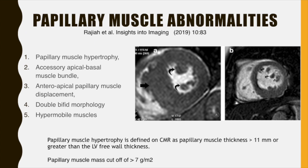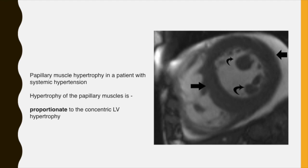The subvalvular apparatus consists of the papillary muscles and chordae tendineae. A number of papillary muscle abnormalities can be noted in patients with HCM such as papillary muscle hypertrophy, accessory apical basal muscle bundle, anteroapical papillary muscle displacement, double bifid morphology, and hypermobile muscles. Papillary muscle hypertrophy is defined on CMR as a papillary muscle thickness of more than 11 mm or greater than the LV free wall thickness, and a papillary muscle mass cutoff of more than 7 grams per meter square has been proposed. Image A shows severe hypertrophy of the left ventricular septum and hypertrophy of the papillary muscles. Image B shows another patient with three hypertrophied papillary muscles. Papillary muscle hypertrophy can also be present in systemic hypertension — however, the hypertrophy is more often proportionate to the concentric LV hypertrophy seen in hypertension.